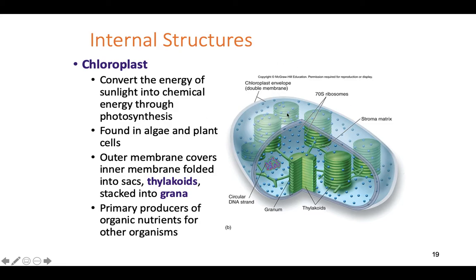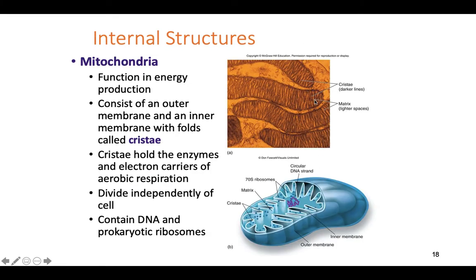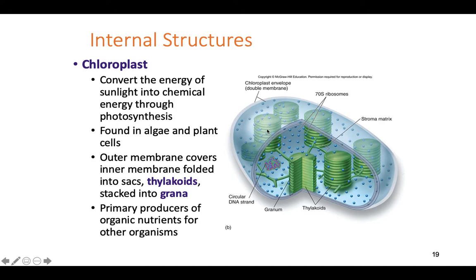Chloroplasts work the same way — they have 70S ribosomes and their own small circular DNA strand totally different from the host cell's DNA. They have two layers of membranes because they were a bacterium that was eaten, which explains the secondary membrane. These are essentially mitochondria, but instead of using sugars to make energy, they use sunlight. The sunlight strikes the grana and thylakoids, and that energy is converted into chemical energy that the cell uses to power itself.